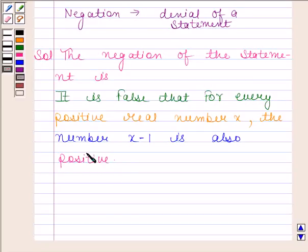Now, this statement implies that x minus 1 is positive when every positive real number x is positive does not hold good. So this means we can rewrite this statement as,